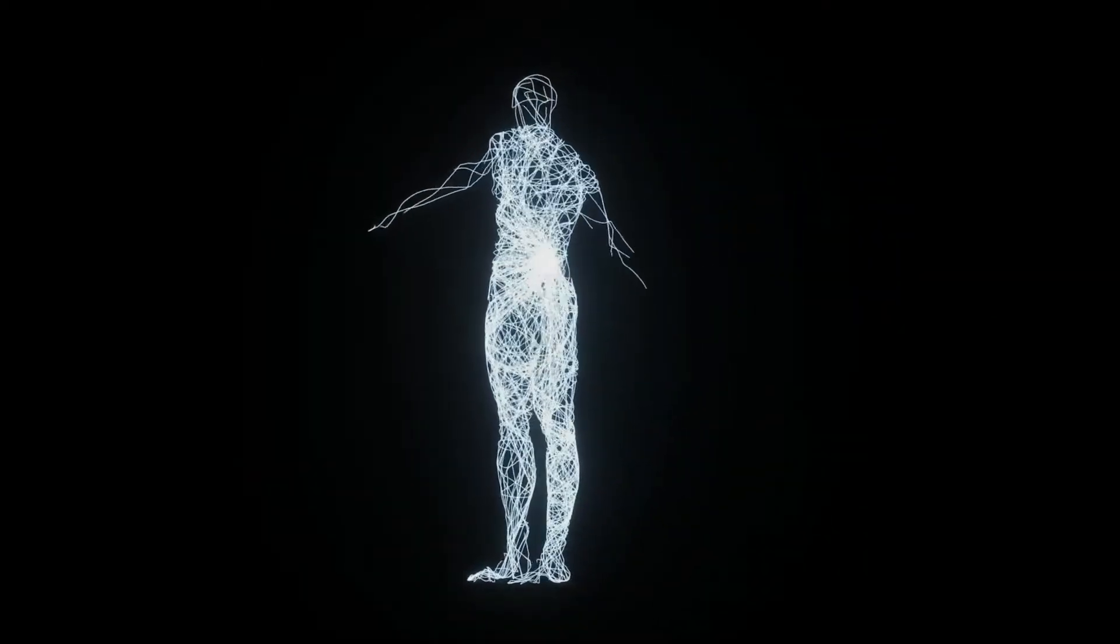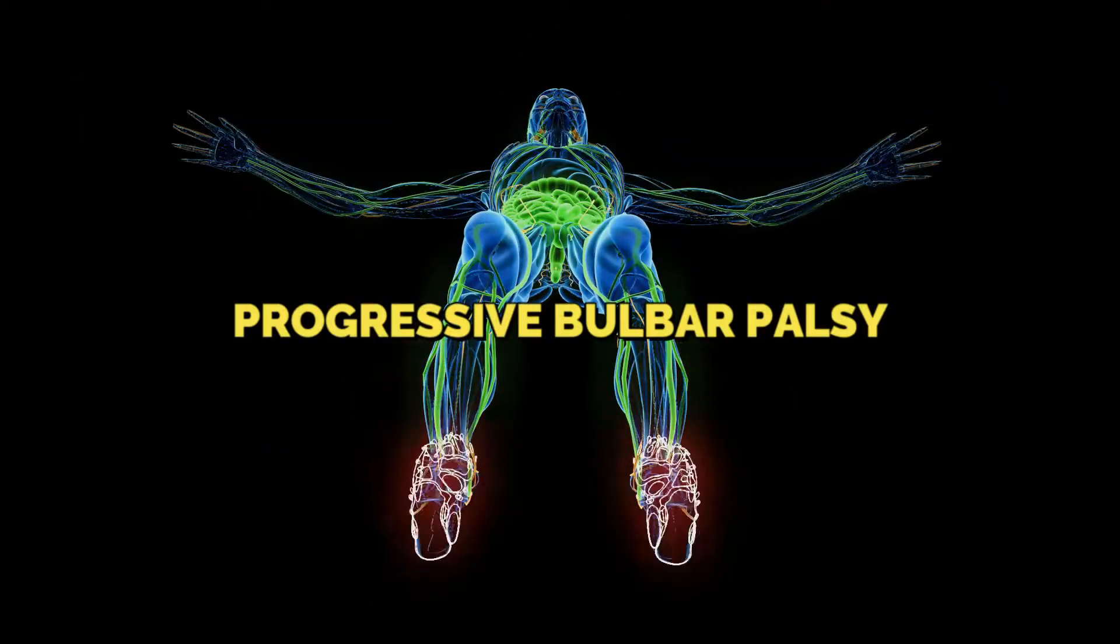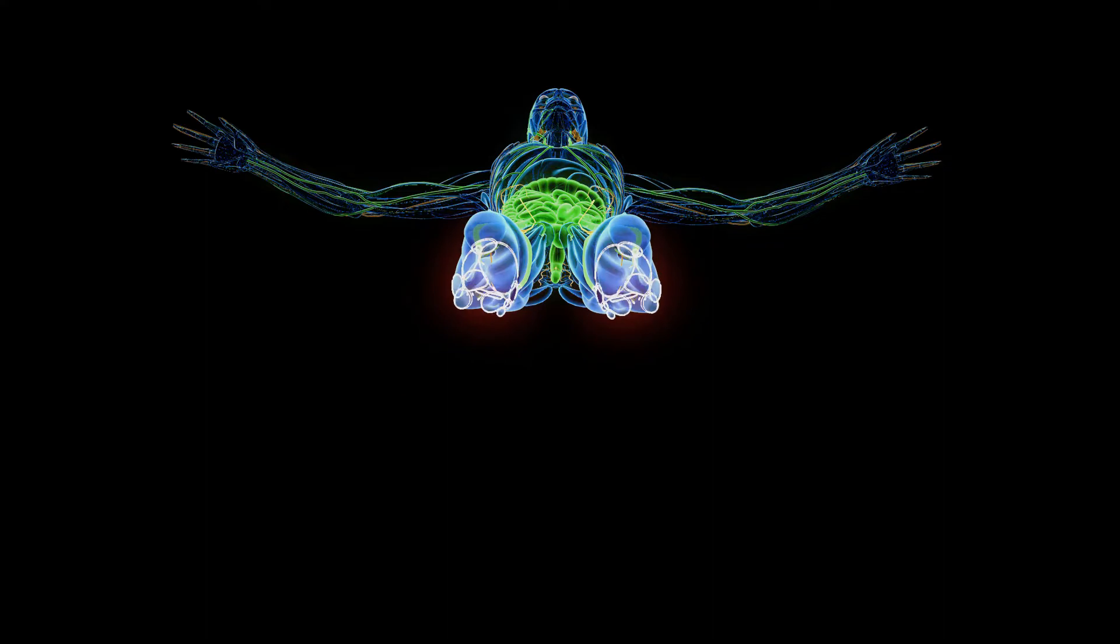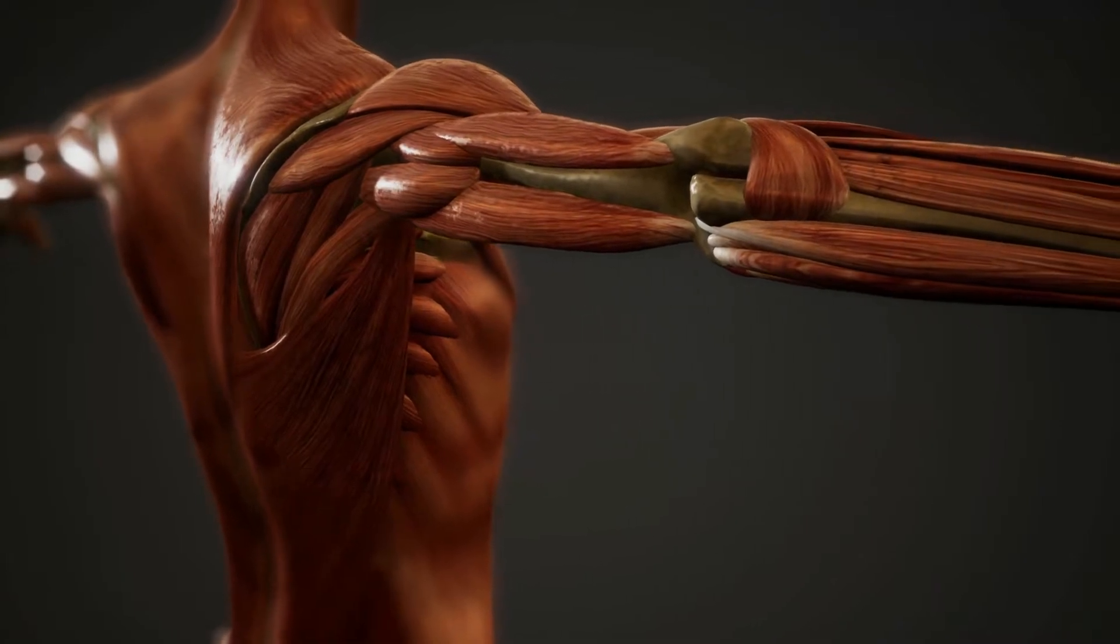classified based on the types of neurons involved and the body part where symptoms begin. Progressive bulbar palsy: In this motor neuron disease, both lower and upper motor neuron lesions are affected. It results in wasting and